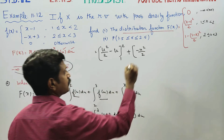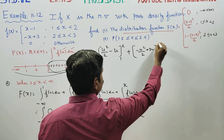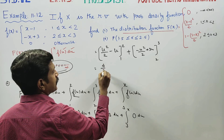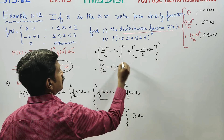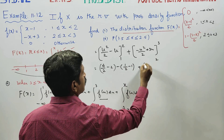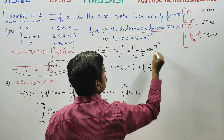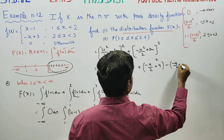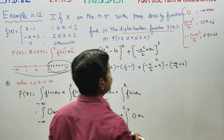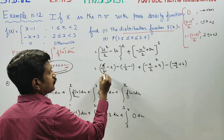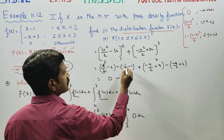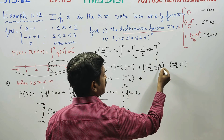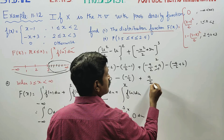Integrating minus u squared by 2 plus 3u with limits 2 to 3: upper limit substitution gives minus 9 by 2 plus 9, and lower limit substitution gives minus 4 by 2 plus 6. That is minus 4 by 2 plus 3 times 2 equals 6. After computing, upper limit minus lower limit: cancel terms, 2 minus 2 is 0, and half minus 1 is minus half.